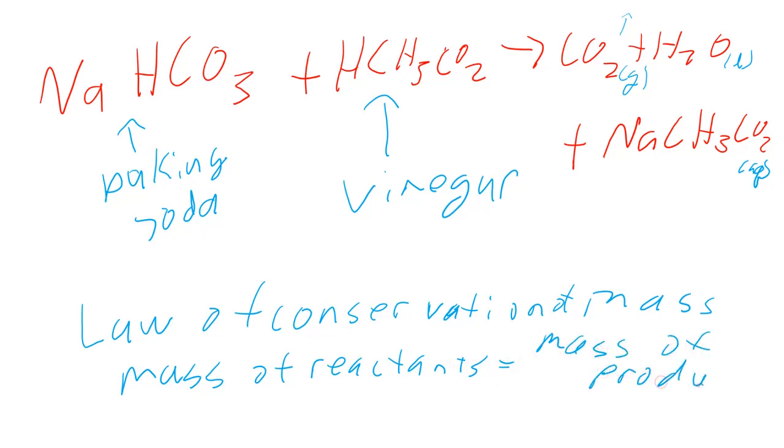So if we know the total mass of our reactants and the mass of our remaining products, we can figure out the mass of the product that escaped into the air. You're going to get yourself about 1 gram of baking soda. It doesn't need to be exactly 1 gram, just roughly about 1 gram.